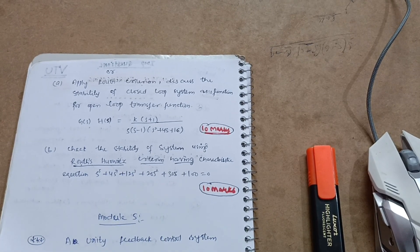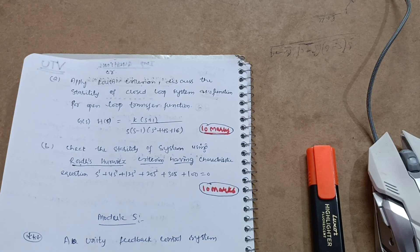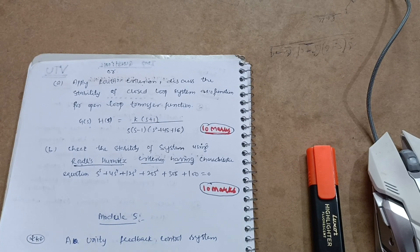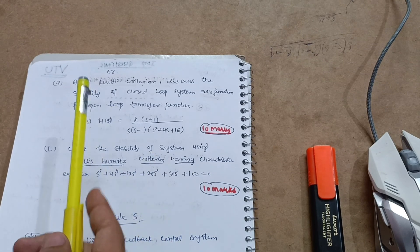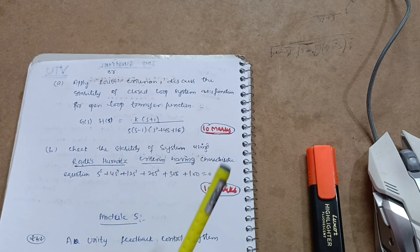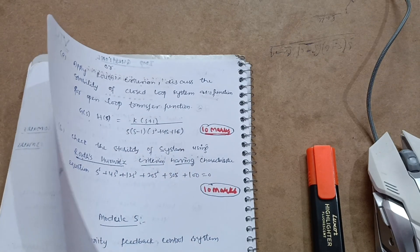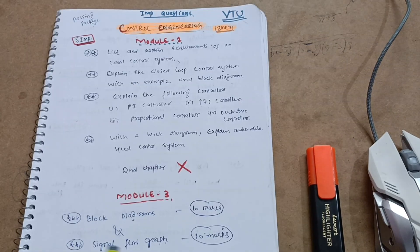From Module 4, go through both Root Locus and Routh's Criteria — covering both is better. If you find difficulty in Root Locus, you can go through the Routh's Criteria part as well, so that you can easily cover 20 marks from this module.